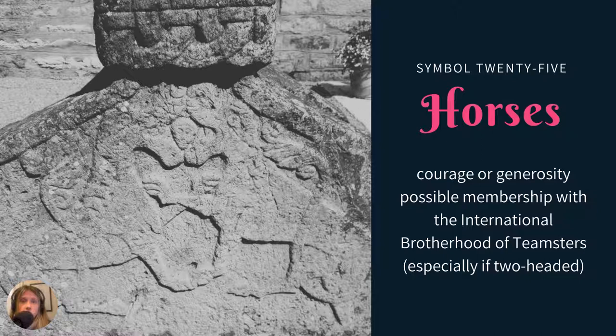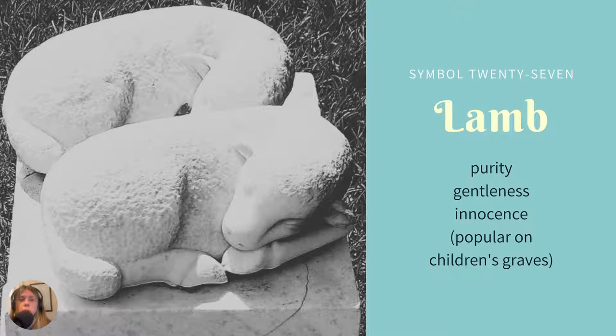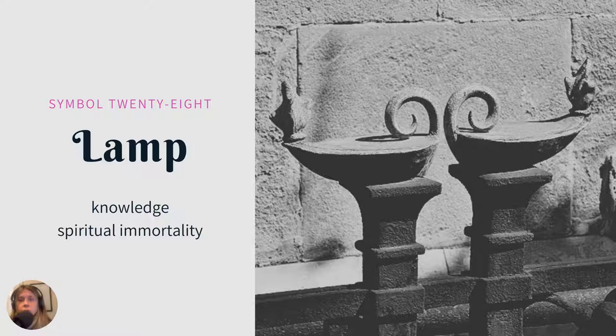Horses — I could not find any examples online of horses, but that doesn't mean you won't come across them. They could represent courage or generosity. They could also represent membership in the Brotherhood of Teamsters, whose symbol is a two-headed horse with each head looking in the opposite direction. If you come across that specific symbol, it's a good indication your ancestor was a teamster. Lambs are usually a very popular motif for children's graves — purity, gentleness, innocence. These are always precious and heartbreaking to see in a cemetery, but fairly common for children.